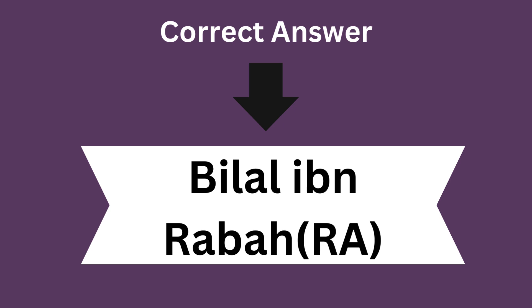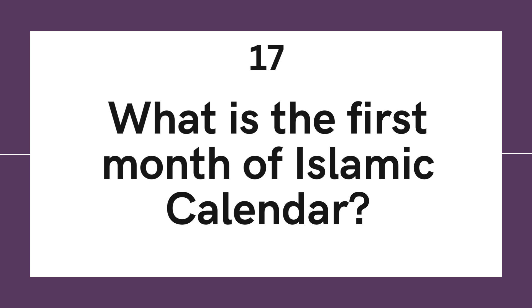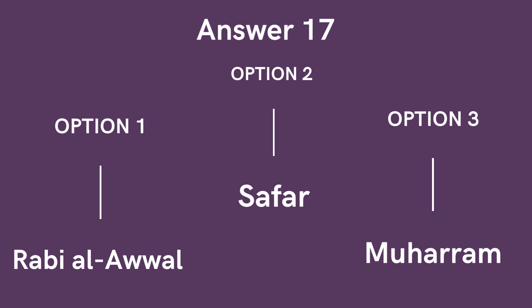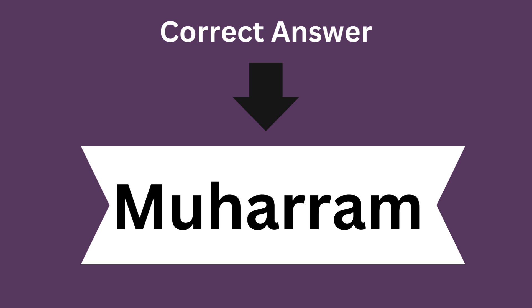Question 17: What is the first month of the Islamic calendar? Option 1: Rabiul Awal. Option 2: Dhul Hijja. Option 3: Muharram. And the correct answer is Muharram.